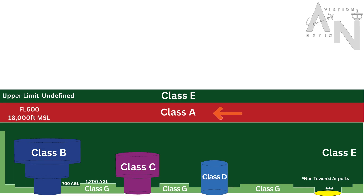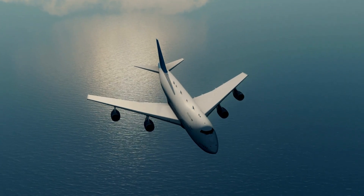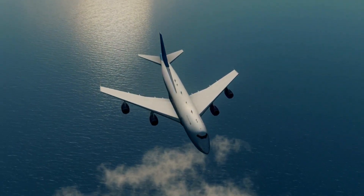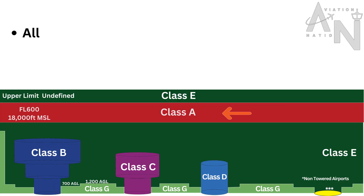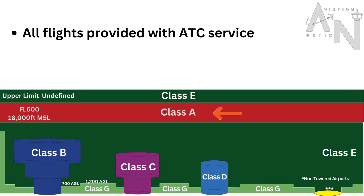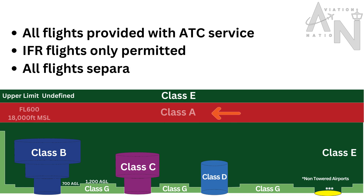We'll start with Class A airspace. This airspace begins at 18,000 feet above sea level and extends up to 60,000 feet. It's typically used for high altitude, long distance, and commercial flights. In Class A airspace, all aircraft are under the control of air traffic controllers, and pilots must follow instrument flight rules (IFR). All flights are provided with ATC service, and all flights are separated from each other.